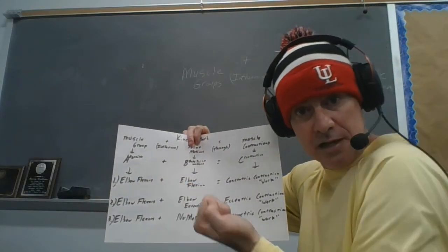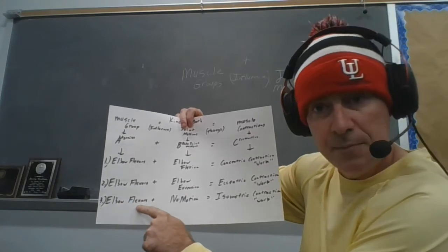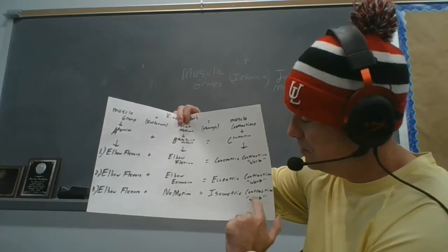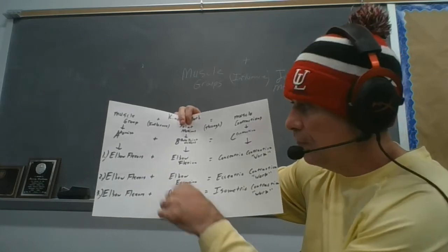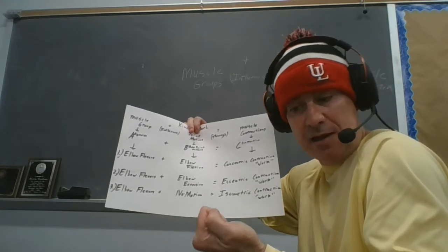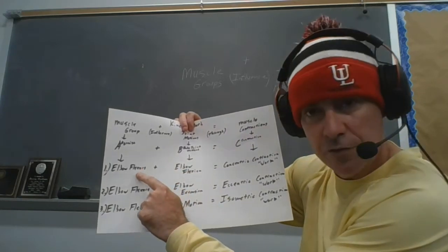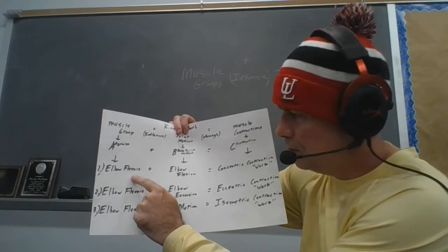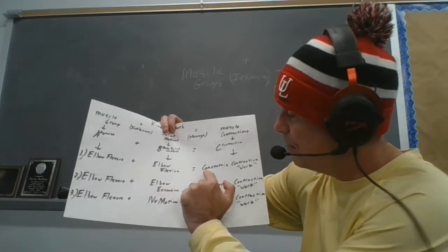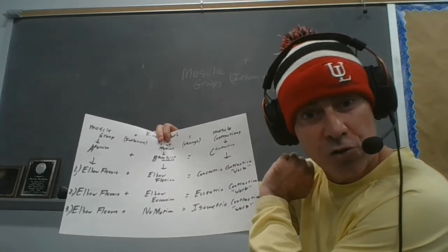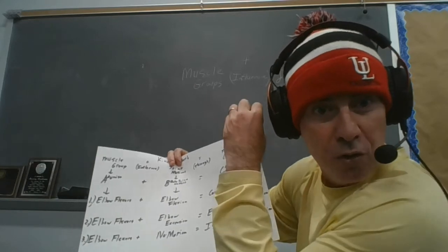If I need my elbow flexors — like in the curl example with weight in my hand — if my elbow flexors are doing a job pulling in the direction of elbow flexion above resting tone, and I observe elbow flexion, the only way this can happen is through concentric contraction: shortening while trying to shorten above resting tone, doing the job you're trying to do, moving the joint in the direction of your pull. Winning.